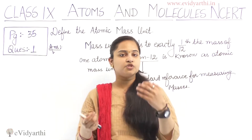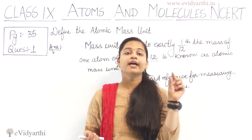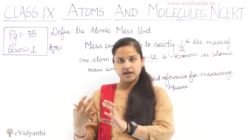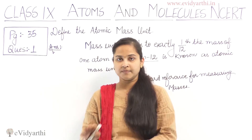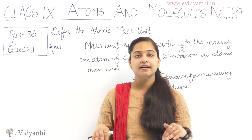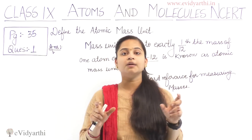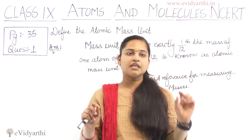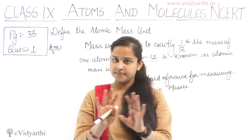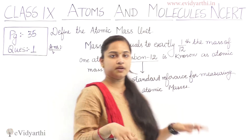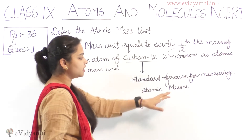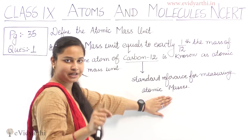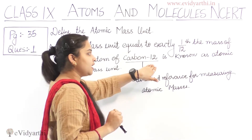If someone asks for 1 kg of fruit, he will put 4 pieces of watermelon on the scale and give fruit accordingly. So the watermelon serves as a standard reference unit — the 12 units of watermelon is his reference. In the same way, we have a standard reference unit for measuring atomic masses, and that standard unit is carbon-12.